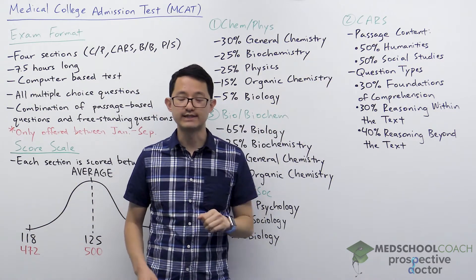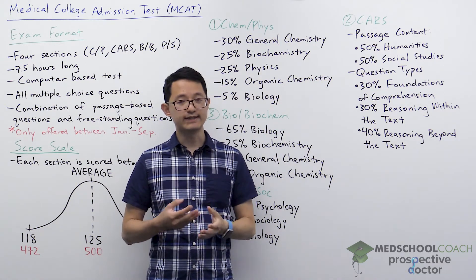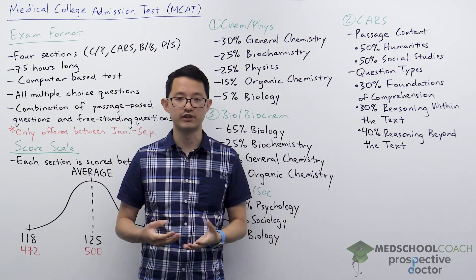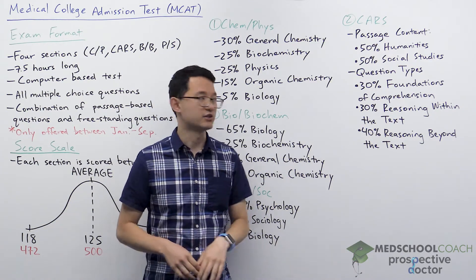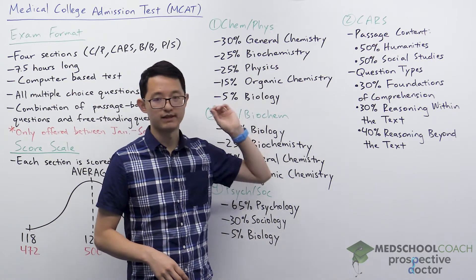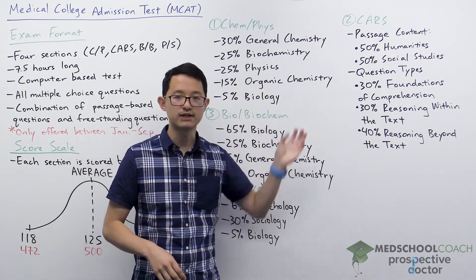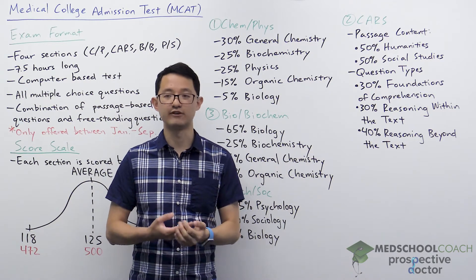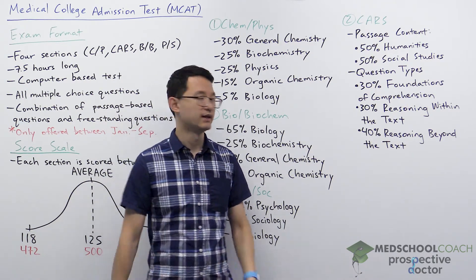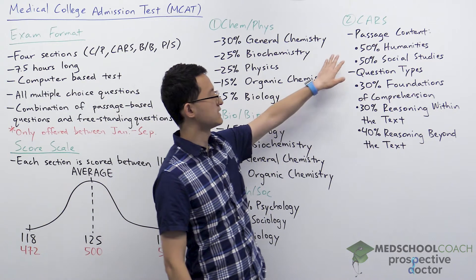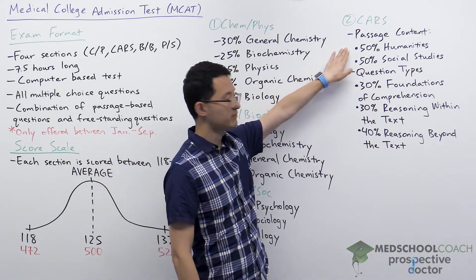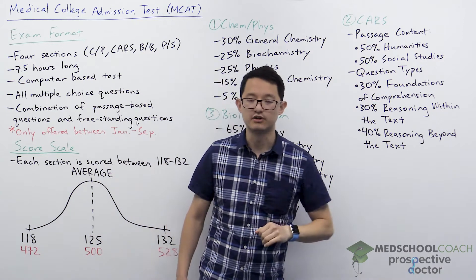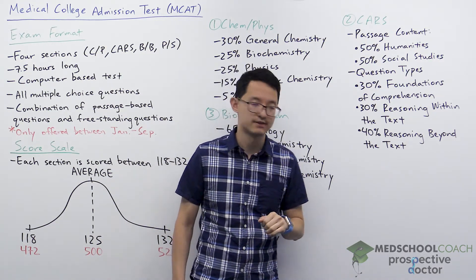The Critical Analysis and Reasoning Skills section is unique in that it doesn't test any prior knowledge of content. You don't need to know anything about the humanities or social studies — you're tested purely on your critical analysis and reasoning skills. About half the passages are on humanities topics and half are on social studies topics.